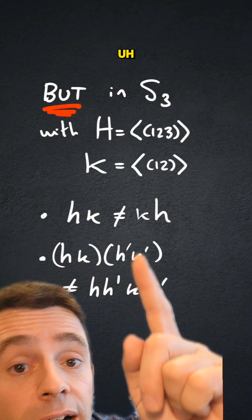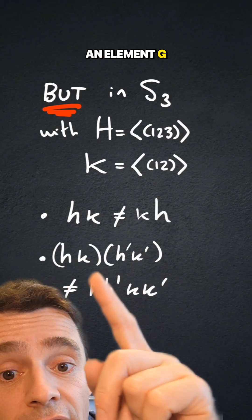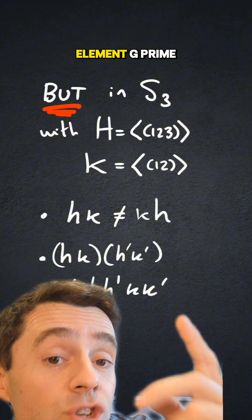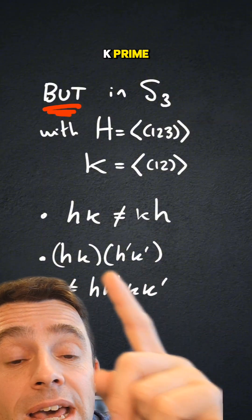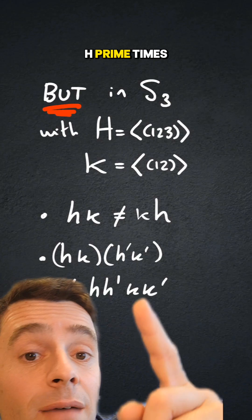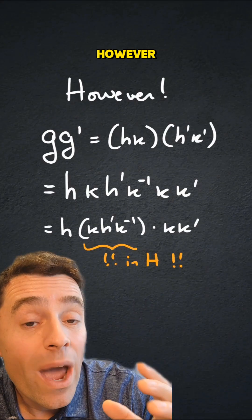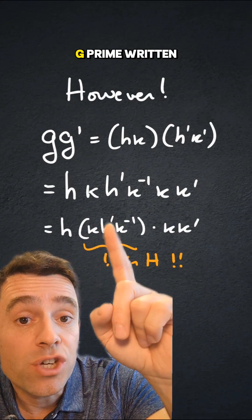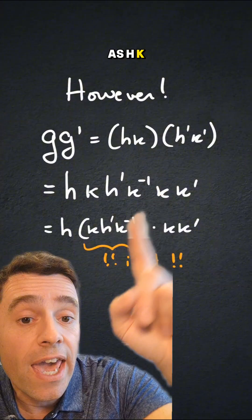And moreover, if I write an element g as hk, I write an element g' as h' k', the product of the two elements is not just hh' times kk'. However, if I have a g and g' written as hk and h' k', what I can do is multiply after h'